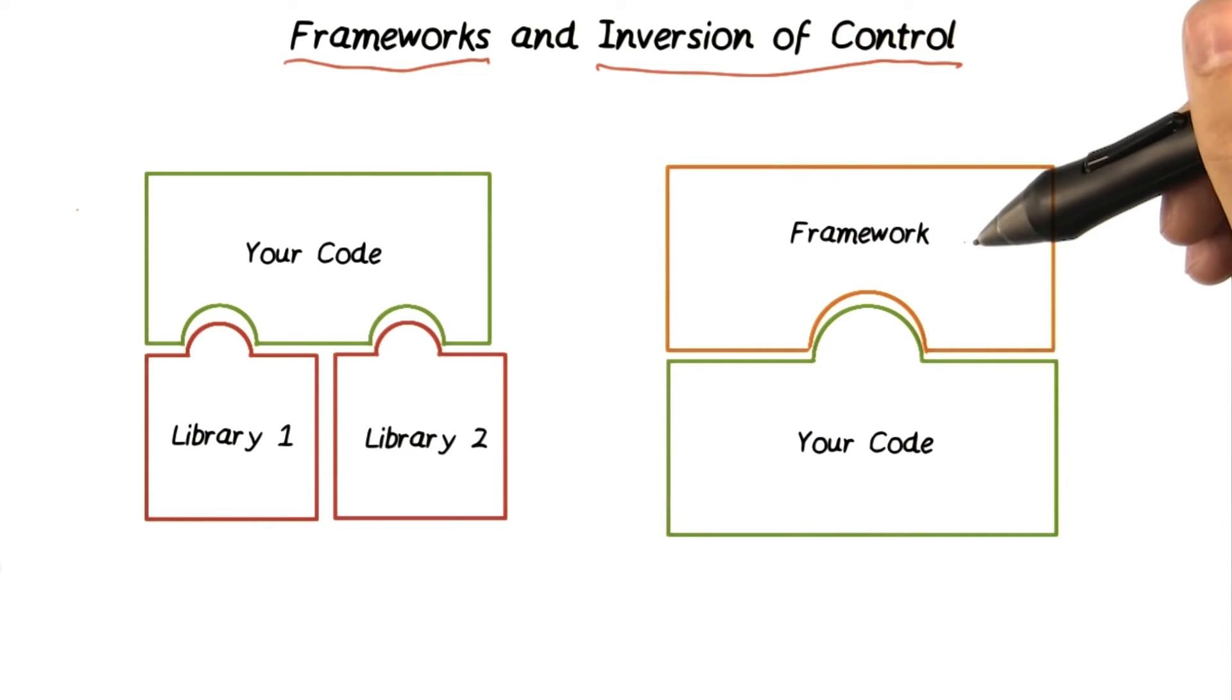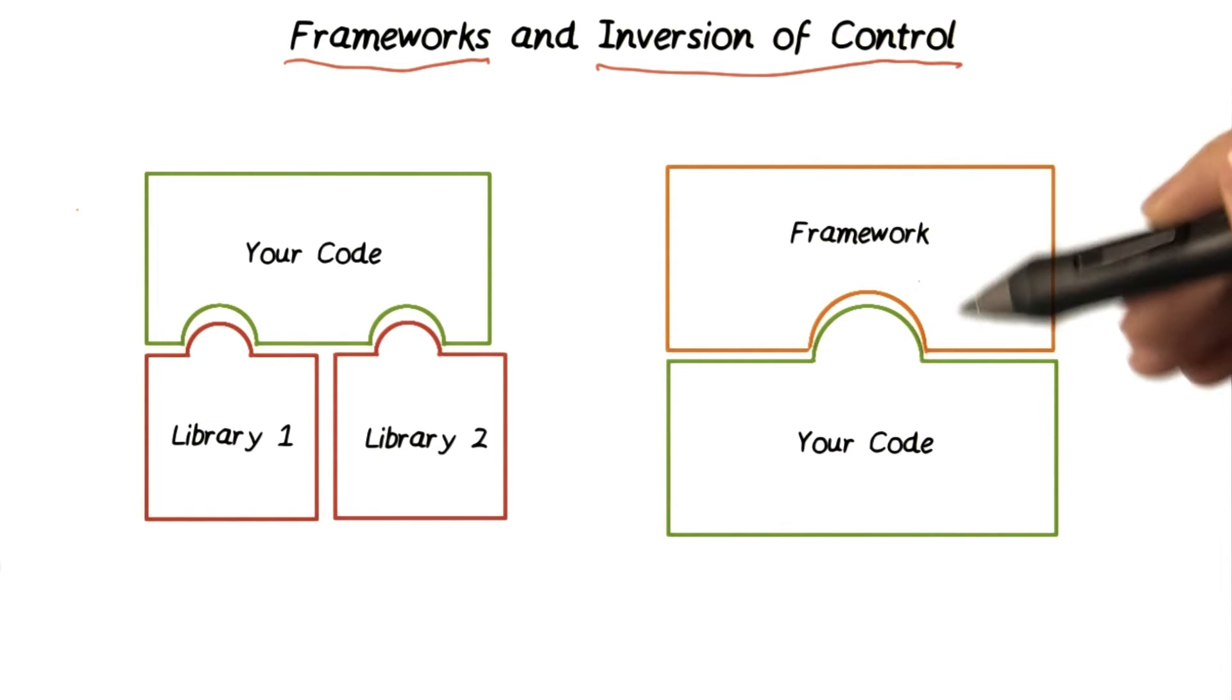And then your code returns control back to the framework. This is called inversion of control, or more colloquially, the Hollywood principle.